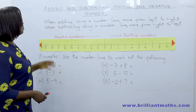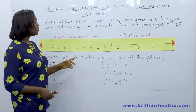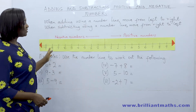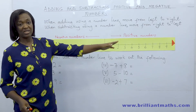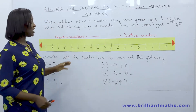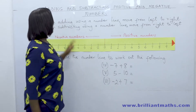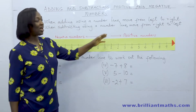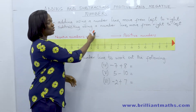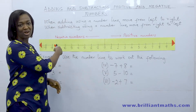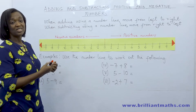Let's look at adding and subtracting positive and negative numbers using a number line. When adding using a number line, you move from left to right because the numbers will be increasing. But when subtracting using a number line, you go from right to left, because when you are subtracting you are taking away and the number will get smaller.